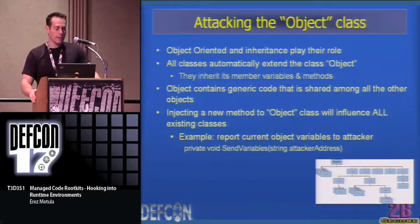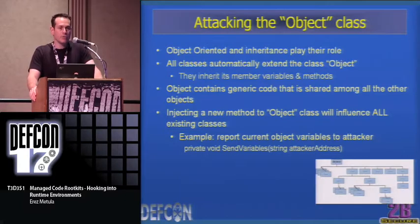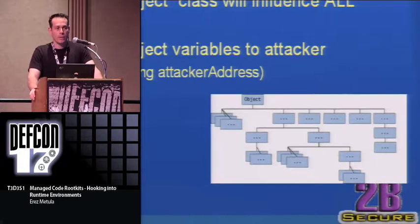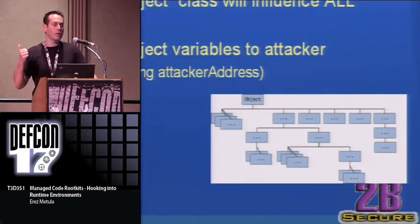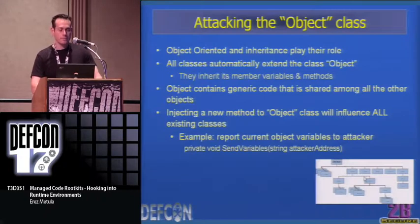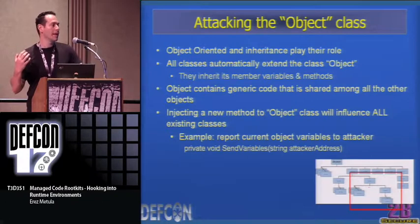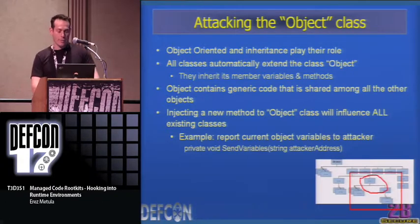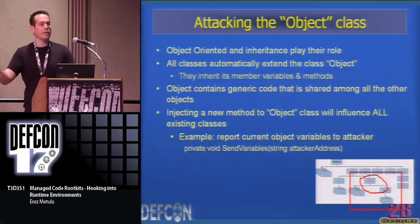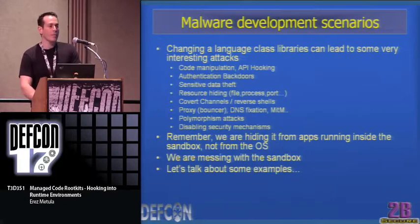Now for some demos. The first attack: stealing authentication credentials from the runtime authentication mechanism — not the application-level code, but the runtime method. It's a boolean method that takes username and password and returns true or false. We're going to inject code into the internal authentication method that takes the username and password and sends it to the attacker using our SendToURL method.